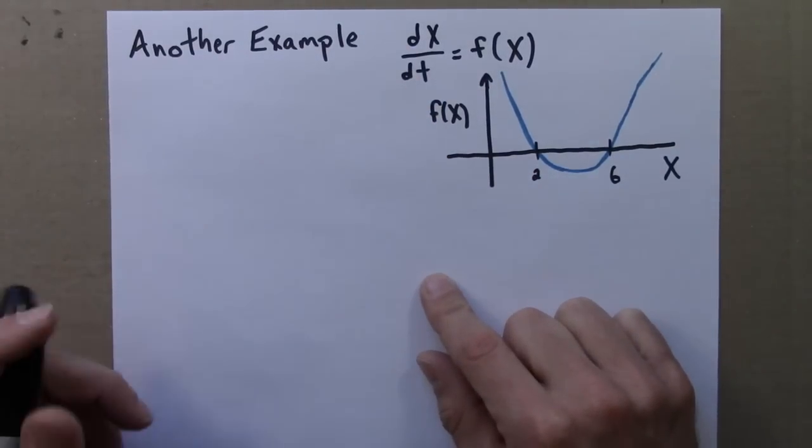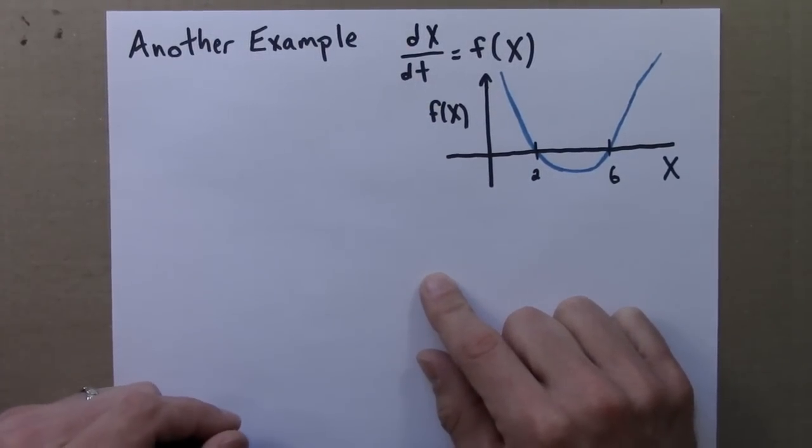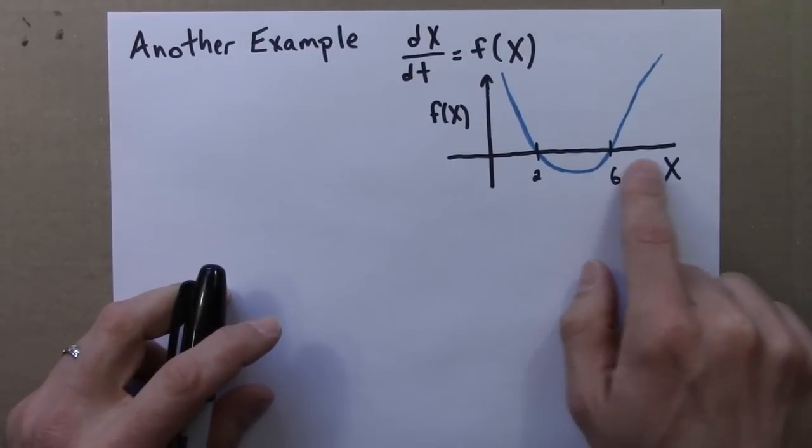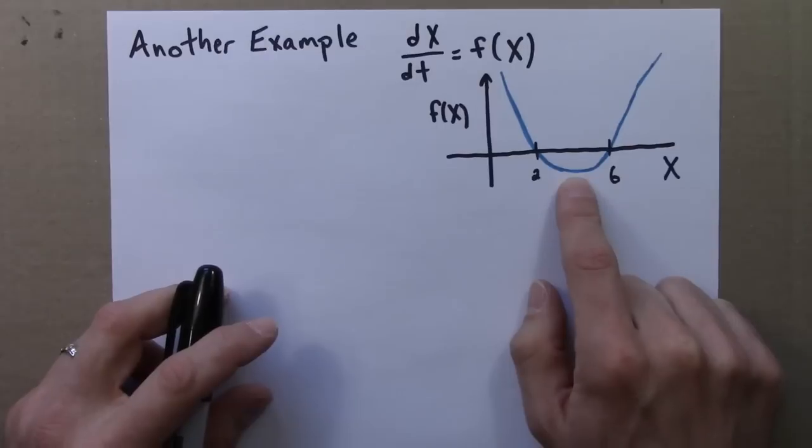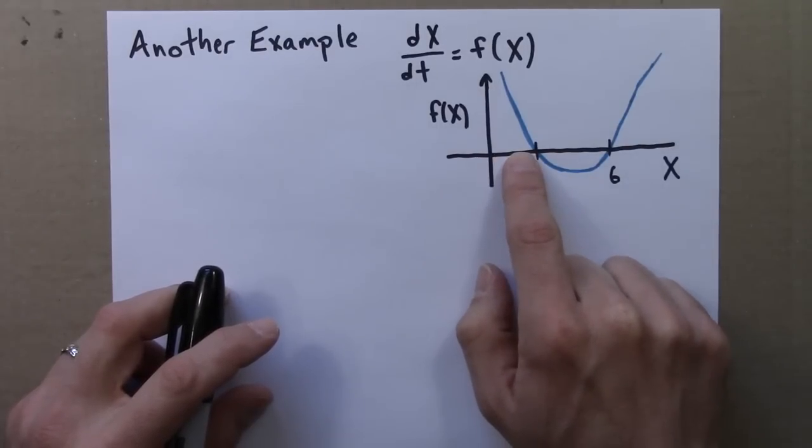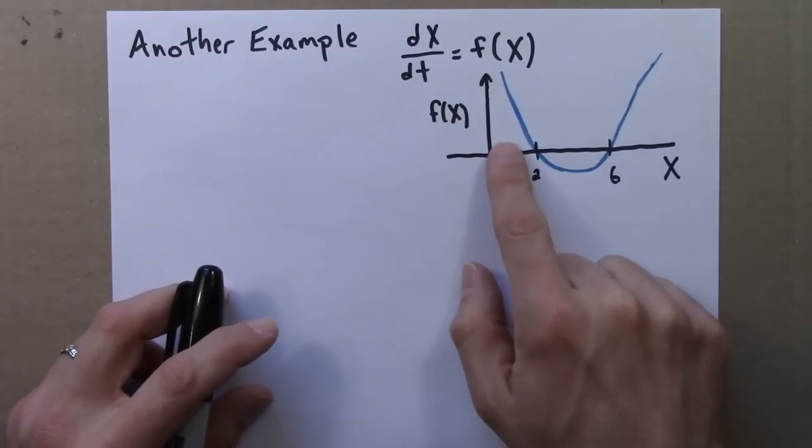Remember, a dynamical system is just a mathematical system that changes in time according to a well-specified rule. This plot is a representation of that rule. If you're less than 2, the rule is you should increase. Your derivative is positive. If the derivative is positive, this blue curve is above the axis.